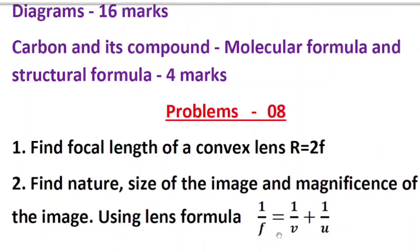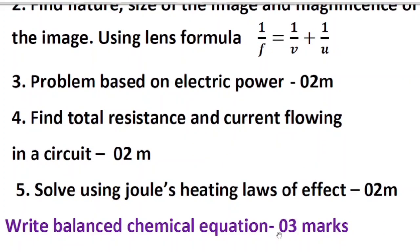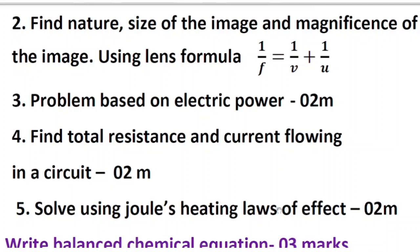The third problem is based on electric power — you use the formula P = V × I. The fourth question is total resistance and current flowing in a circuit. This has been asked in both the model question paper and the state level question paper. You can use the parallel and series formula, and sometimes you can directly use Ohm's law to find the current and resistance.